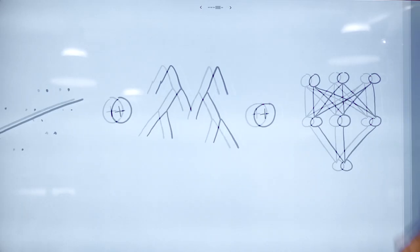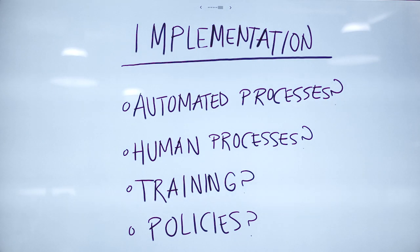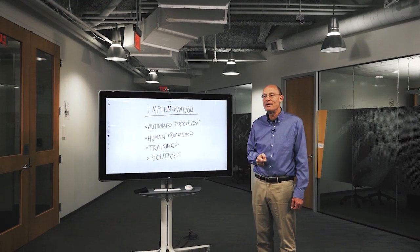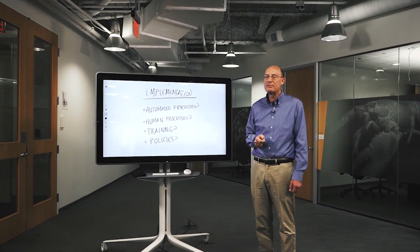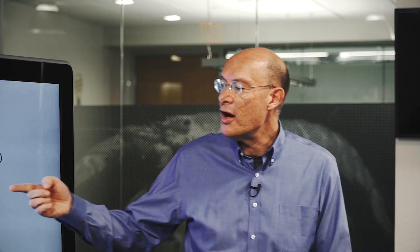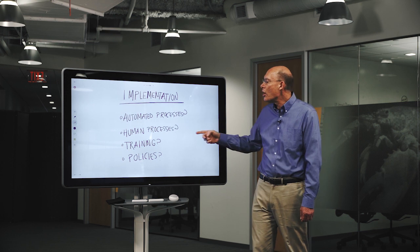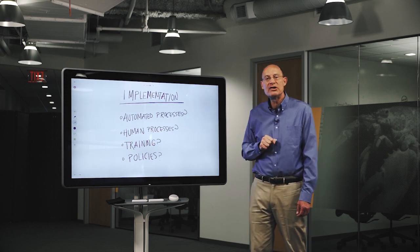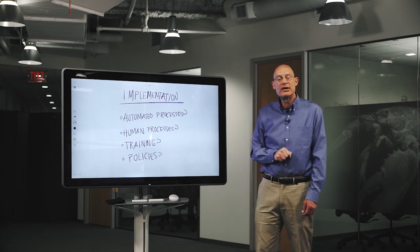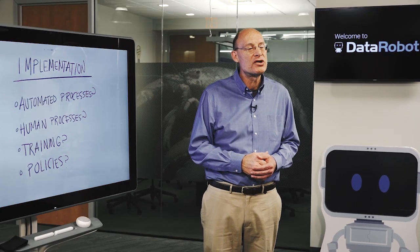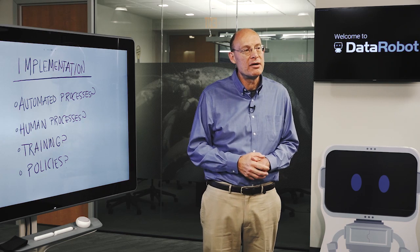And finally, the third mistake is not thinking about implementation early. We don't want to just build machine learning models — we want to positively, measurably improve operational results using machine learning. That means you need to think about whether there are automated processes that will need to change, which means IT work, or human processes that need to change, which might mean training or even changing policies. Think about these things before you build models or even before you start collecting data. Ask yourself: what would it take to get the actual benefits of building this model, and are we prepared to do it?